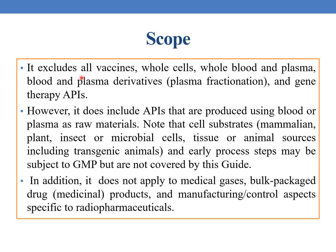This guide excludes all vaccines, whole cells, whole blood and plasma, blood- and plasma-derived products, and gene therapy APIs. However, it does include APIs that are produced using blood or plasma as raw materials. Cell substrates — whether mammalian, plant, insect, or microbial cells, tissue, or animal sources, including transgenic materials — may be involved. Early process steps may be subject to GMP but are not covered by this guide.